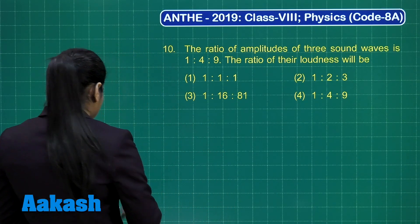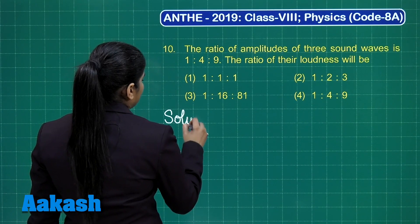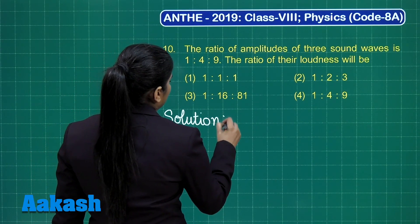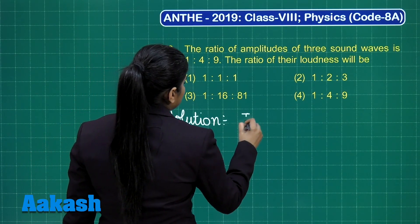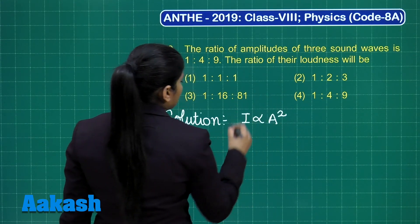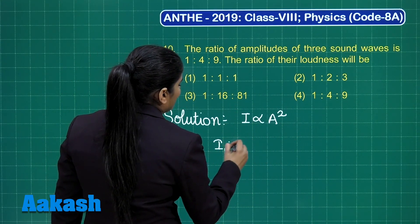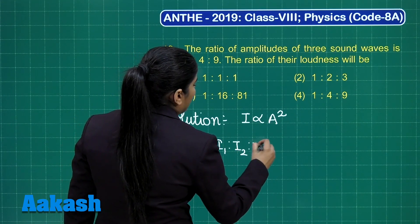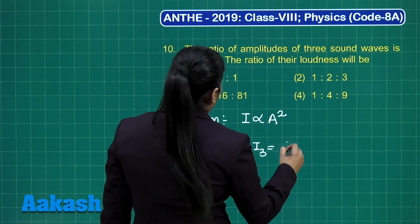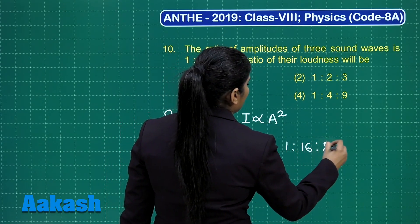If we calculate the relation between intensity and amplitude, we know intensity is proportional to the square of the amplitude. So the ratio of the intensities I1:I2:I3 will be equal to 1:16:81.